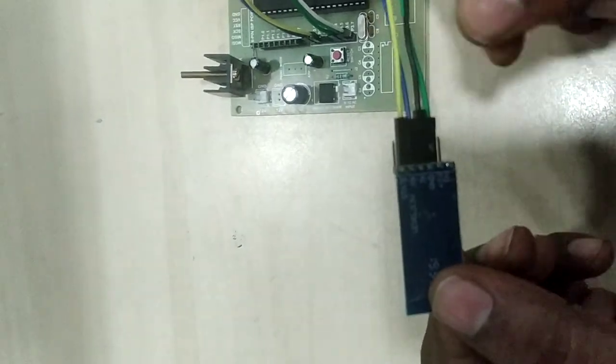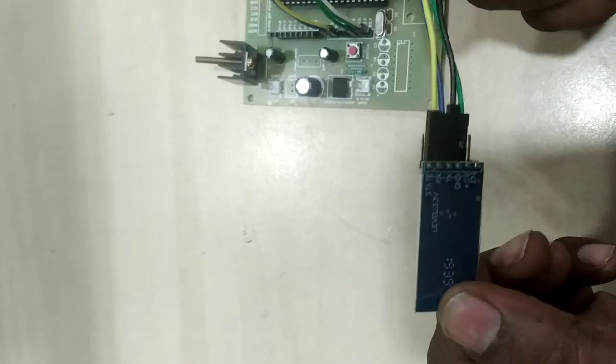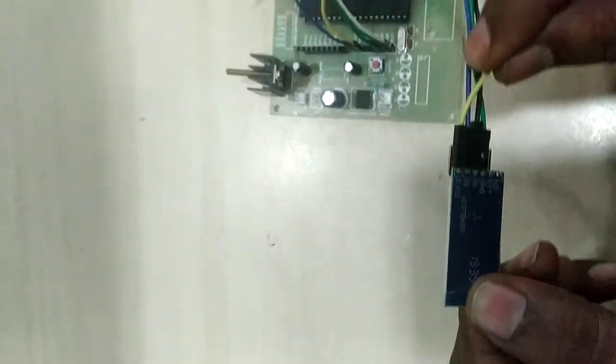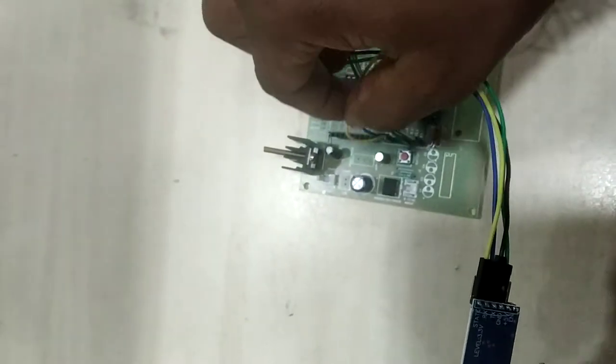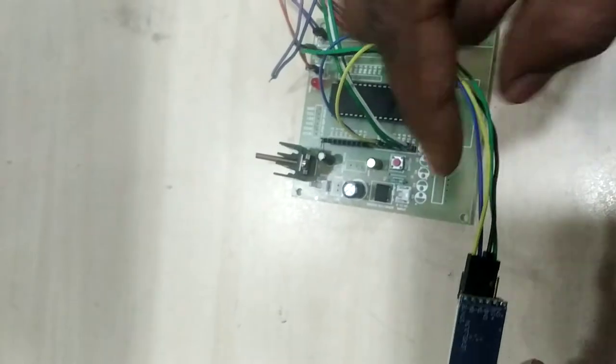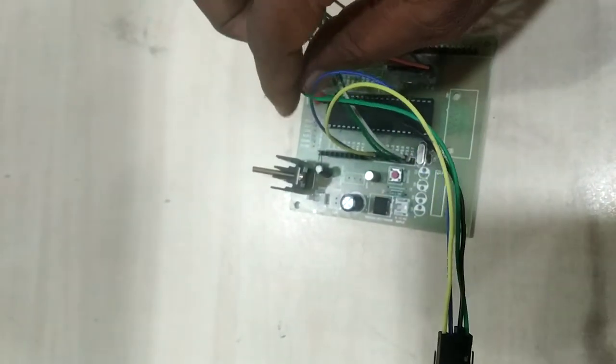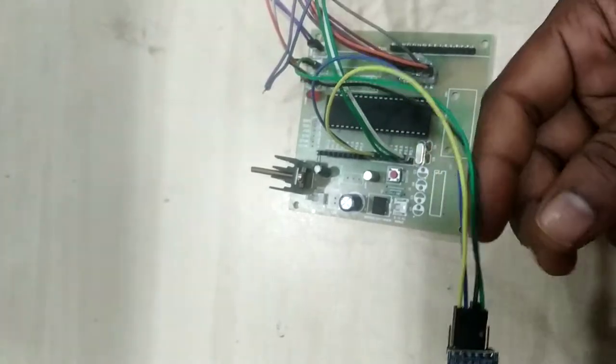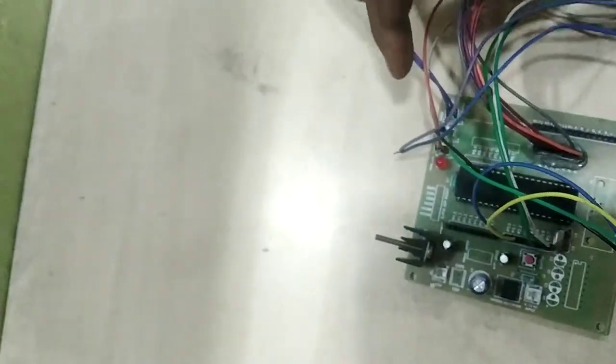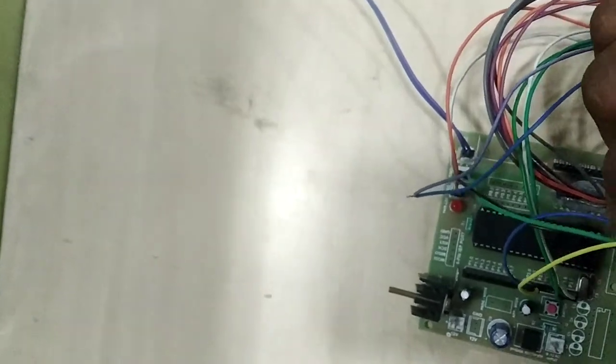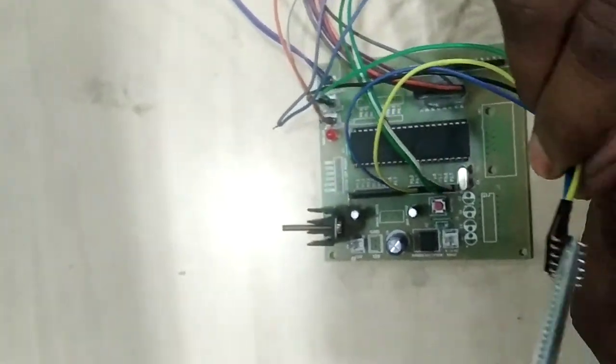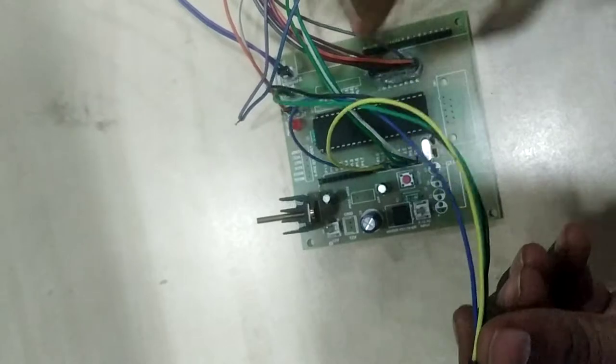The connection is very clear with microcontroller. Rx of Bluetooth module I'm trying to give to Txd pin of microcontroller. And Bluetooth module Tx pin I'm trying to give to Rxd pin of microcontroller. And the other two lines you have to give to power supply, VCC and ground. This is the simple hardware connection required between Bluetooth module and microcontroller board.